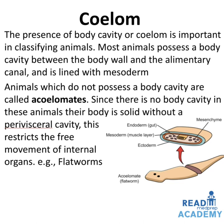The presence of body cavity or coelom is important in classifying animals. Most animals possess a body cavity between the body wall and the alimentary canal, lined by mesoderm. Animals which do not possess a body cavity are called acoelomates. Since there is no body cavity, their body is solid without a perivisceral cavity, restricting free movement of internal organs. Example: flatworms. The cut section shows the ectoderm, the gastric cavity lined by endoderm, and in between there is no coelom, only mesoglea or mesenchyme.